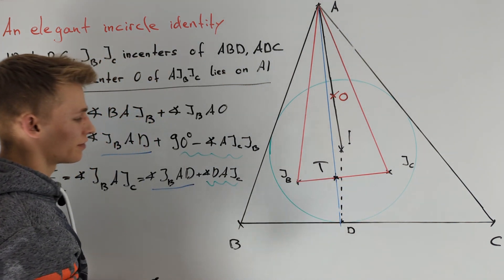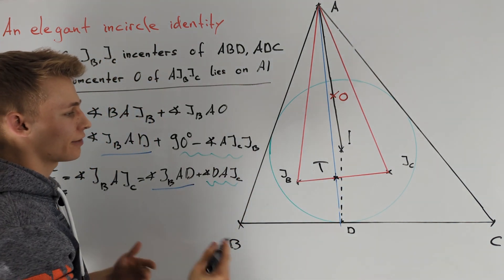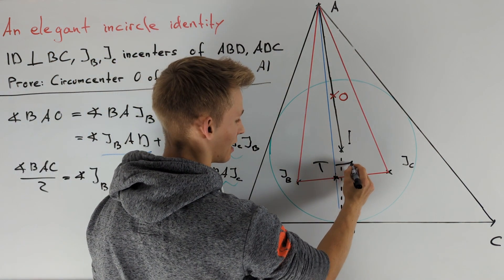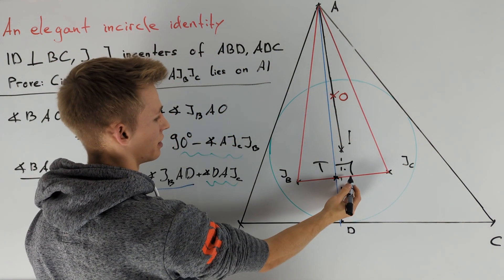To prove these angles are equal, it's enough to prove that angle JCTA equals 90 degrees.